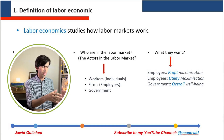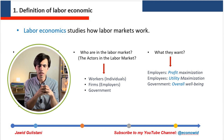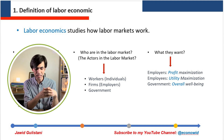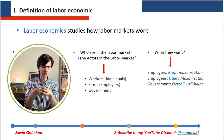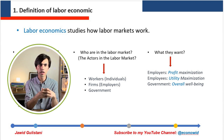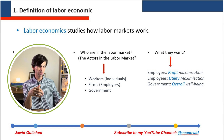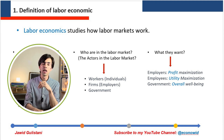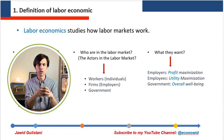The third actor in the labor market is the government. The government engages in the labor market to regulate it in order to promote economic stability, ensure fair competition, protect worker rights, and redistribute income among different groups in society. Overall, the government's main objective is to increase the social well-being of the country.